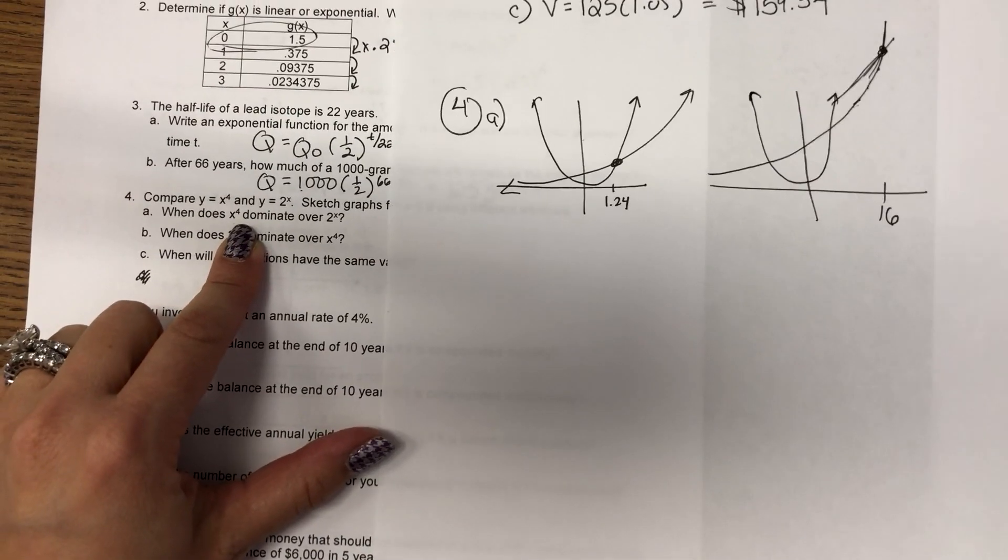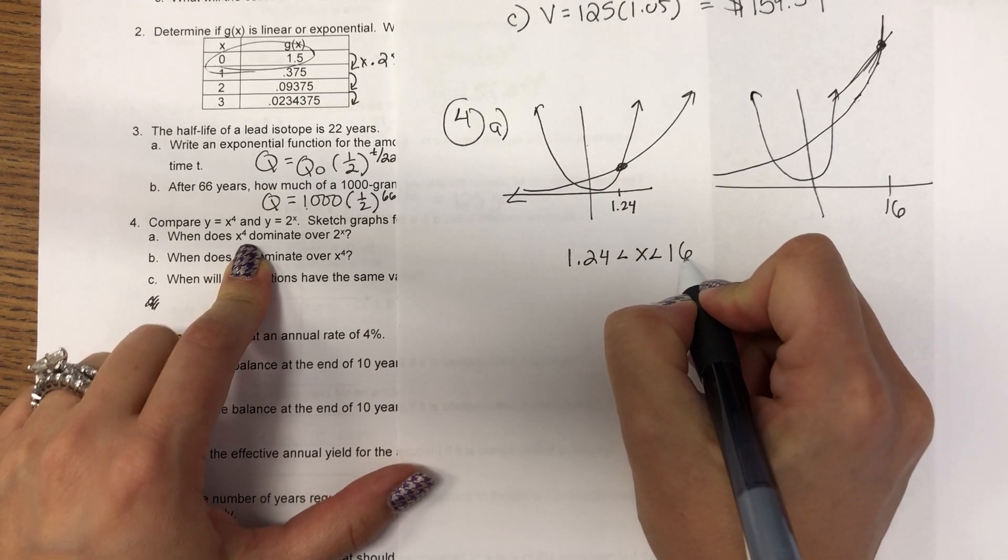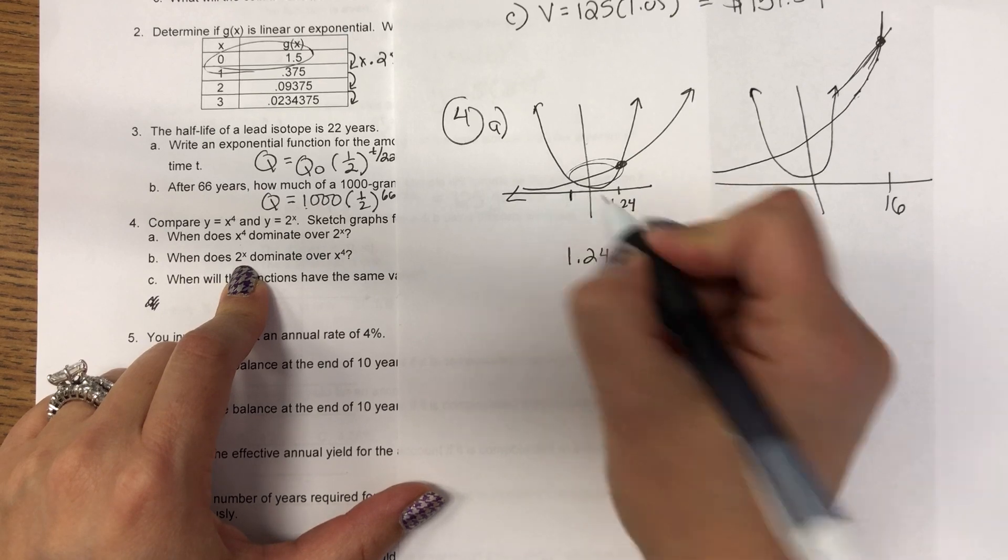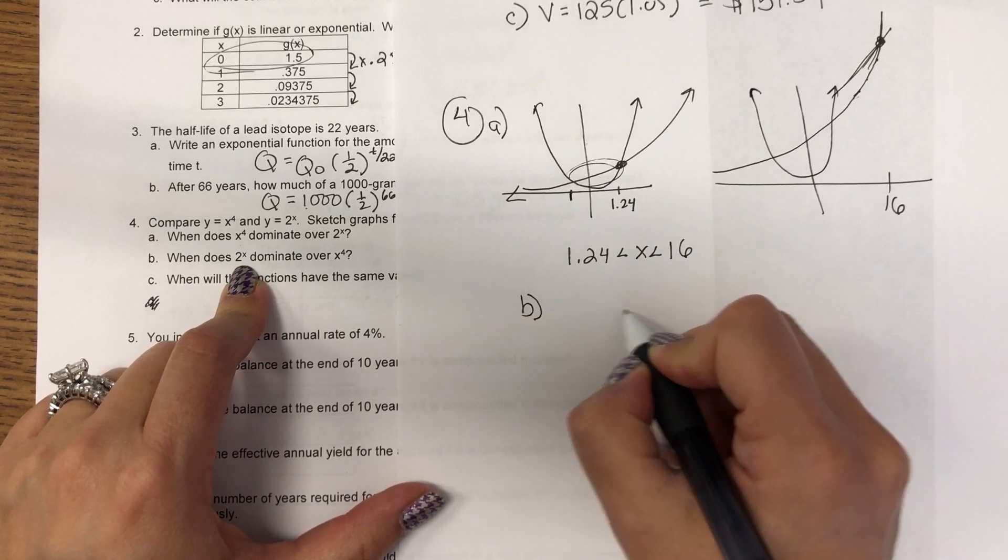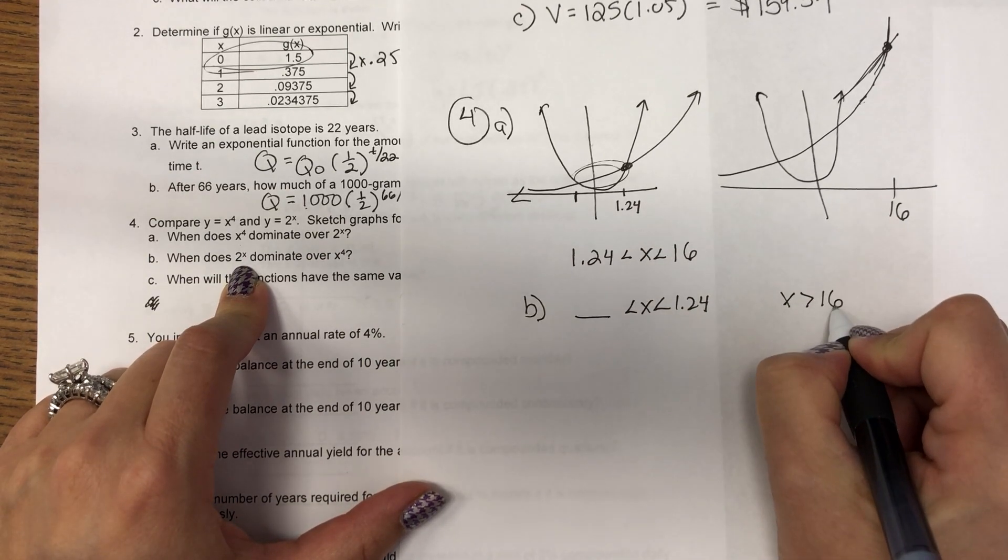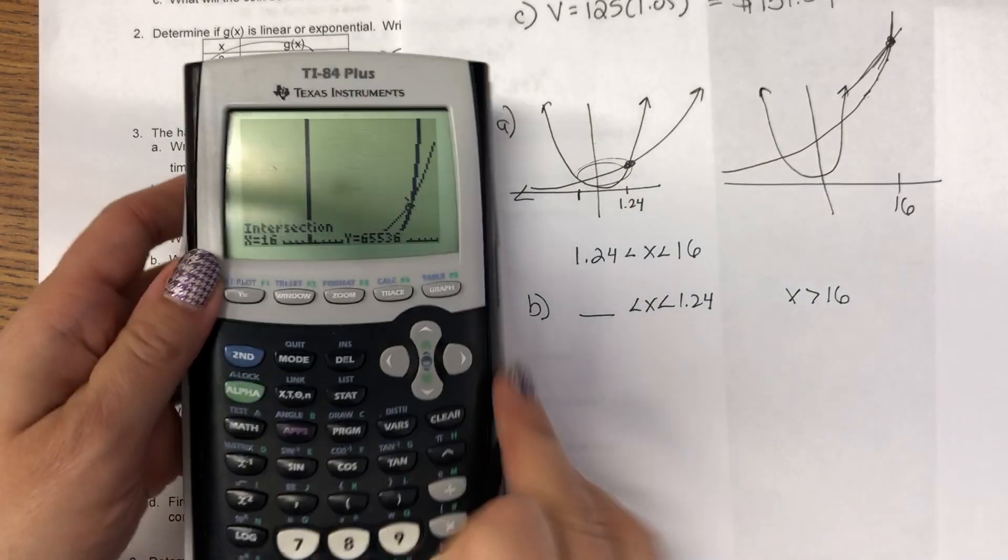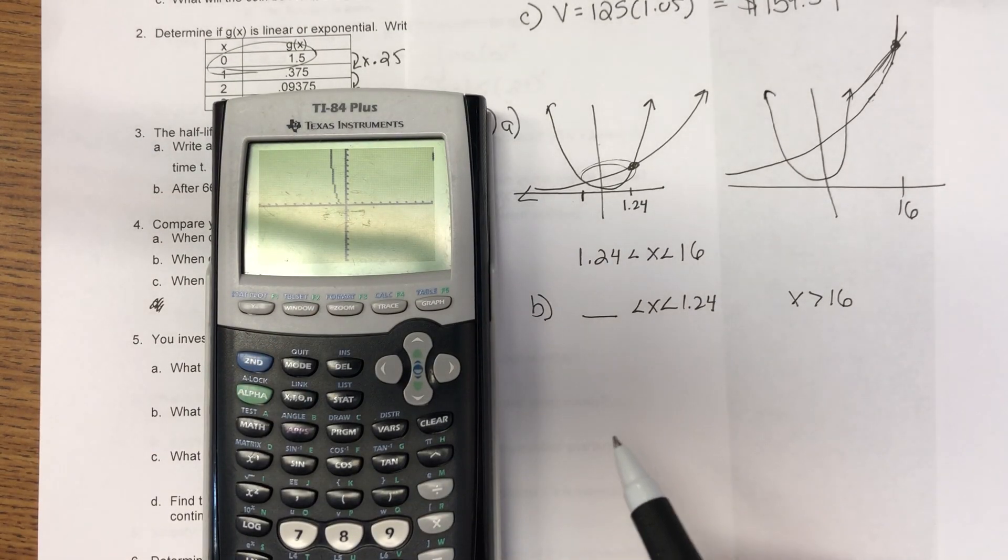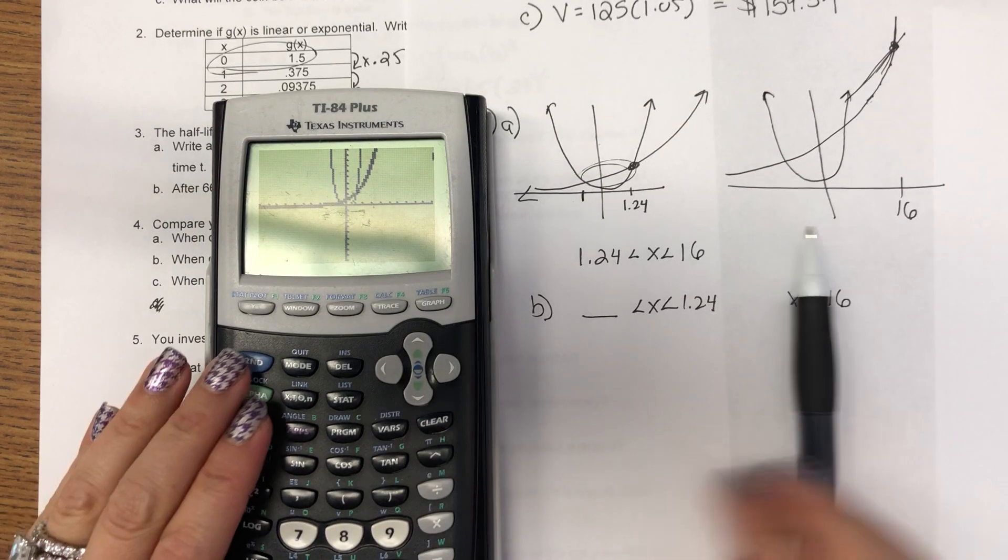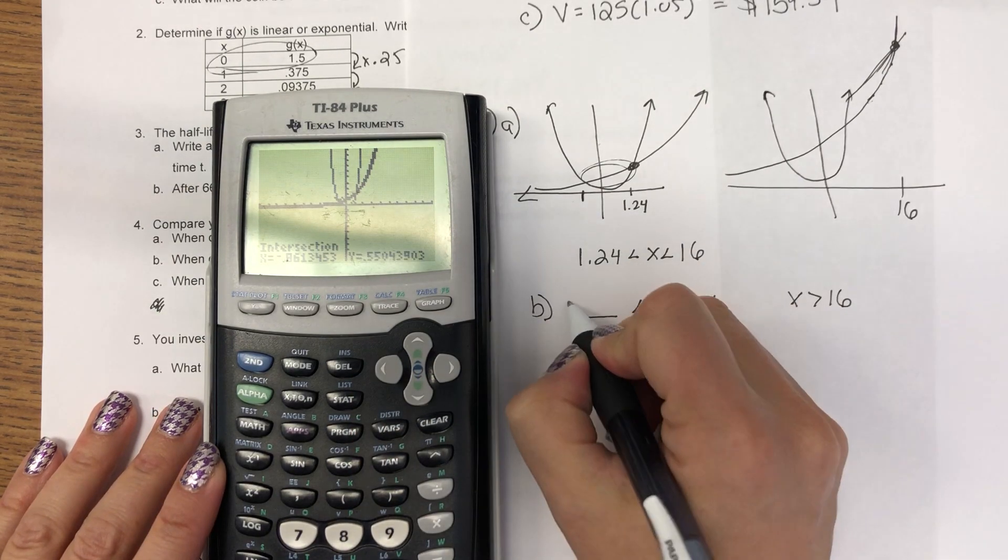So, X to the fourth is larger between 1.24 and 16. 2 to the X is larger, well, right here. Oh, I didn't find this negative one. I'll go back and do that. From some number to 1.24 and then bigger than 16. So, let me find this third point. Let me make my window small again. Hit zoom six. So, that's over here on the left of the Y axis.